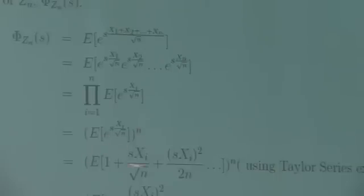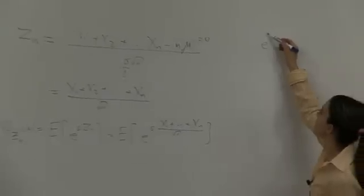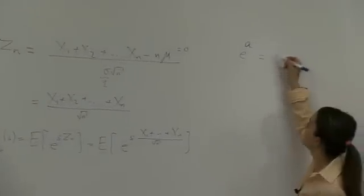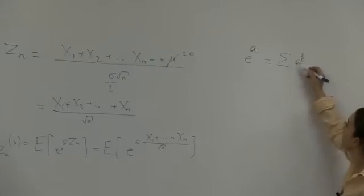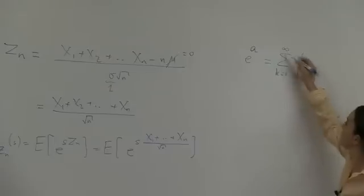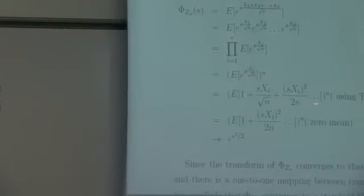Now, we expand this. How do we expand this? We note that we used this identity before. It's the Taylor series expansion of e to the a. e to the a is what? Sum of a to the k over k factorial, k going from 0 to infinity for positive a. We use that to go from this to this. So, this is a. S xi over square root of n is a. This is e to the a. So, I'm expanding this using the Taylor series expansion of e to the a. And, I get this.